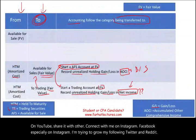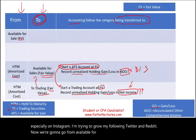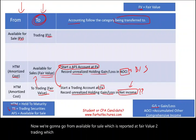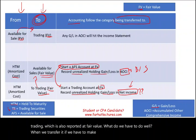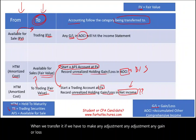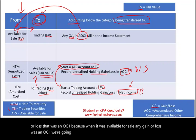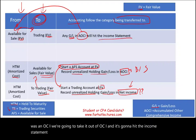Now, transferring from available for sale, which is reported at fair value, to trading, which is also reported at fair value. When we transfer, any gain or loss that was sitting in OCI — because when it was available for sale, any gain or loss was in OCI — we're going to take it out of OCI and it's going to hit the income statement.